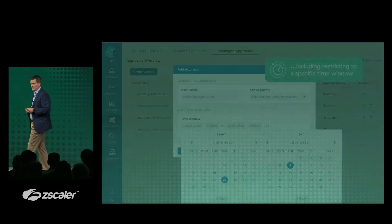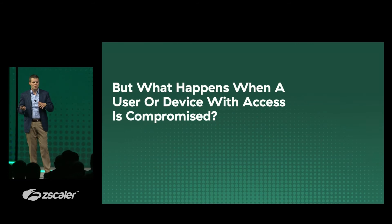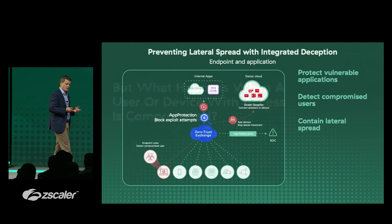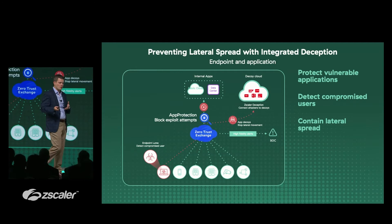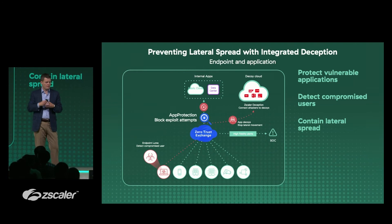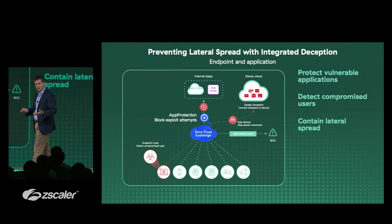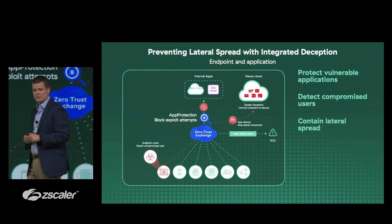Even with the most perfectly managed attack surface, users can and will be compromised. A suite of capabilities introduced inside ZPA over the last six to twelve months is being doubled down on. Application protection helps protect vulnerable applications. Deception is being extended not just from the application layer but also out to the endpoint, to help understand when a user is compromised and contain the lateral spread event.